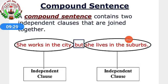A compound sentence consists of two or more independent clauses. Example: 'She works in the city, but she lives in the suburbs.' 'She works in a city' is an independent clause — not dependent on any other word. 'She lives in the suburbs' is also an independent clause. So both clauses are independent; they don't depend on any other part of the sentence. So two things we have learned: first, simple sentence; second, compound sentence.